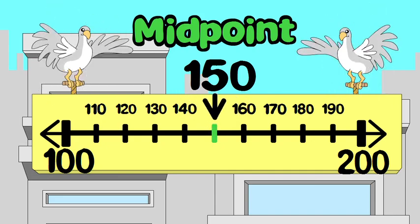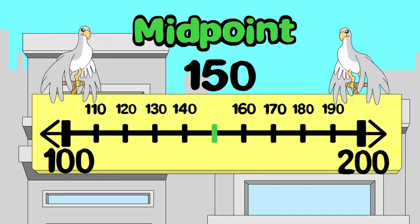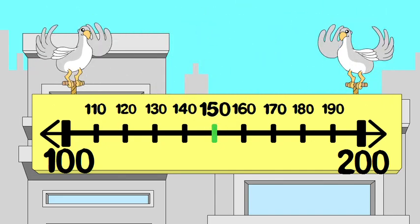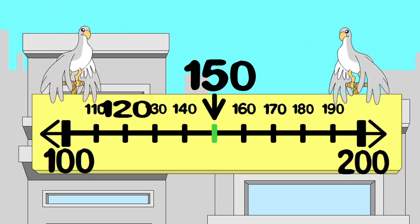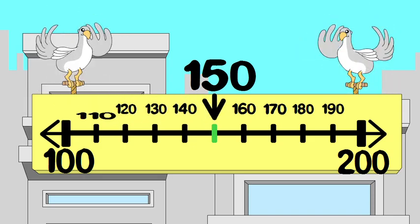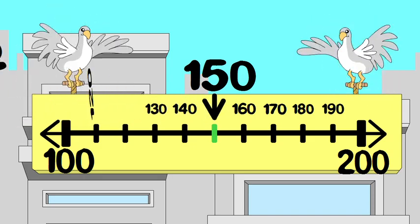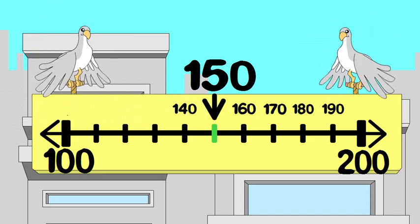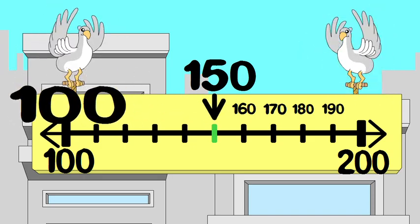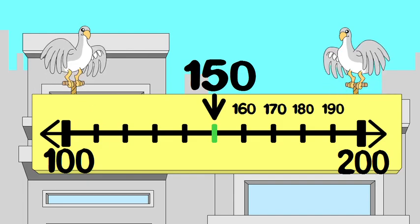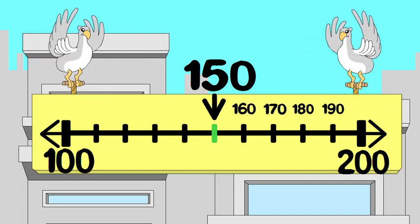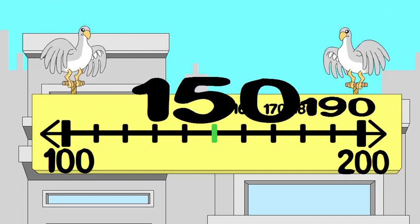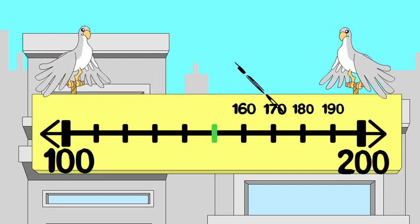And the midpoint is the number that is halfway between two benchmarks. If the number you want to round is less than the midpoint, round down. If the number you are rounding is at the midpoint or greater than the midpoint, round up.